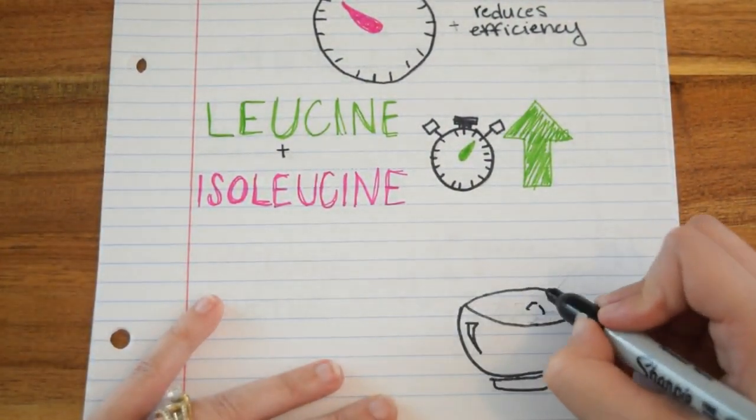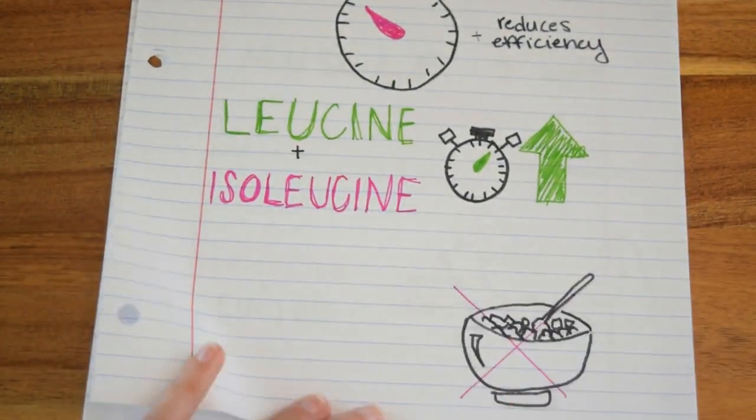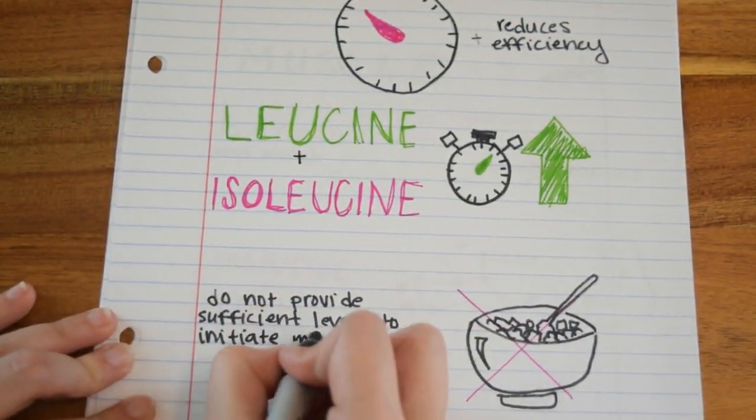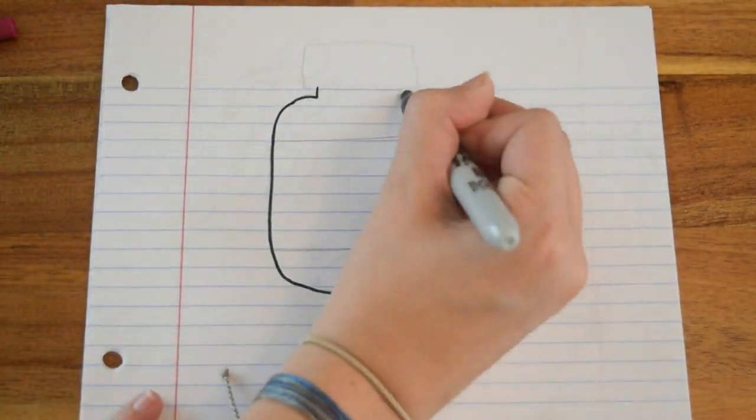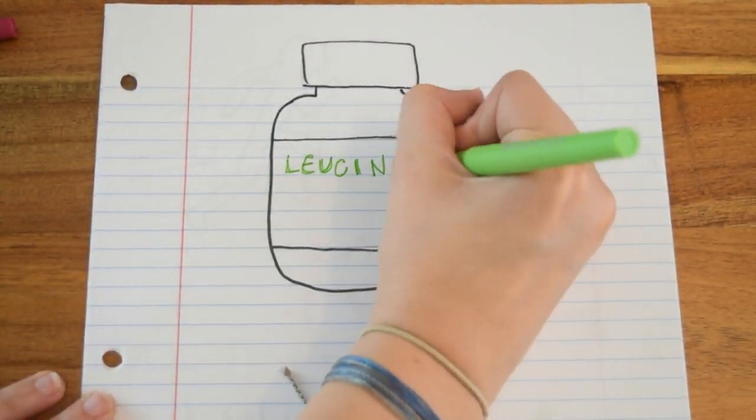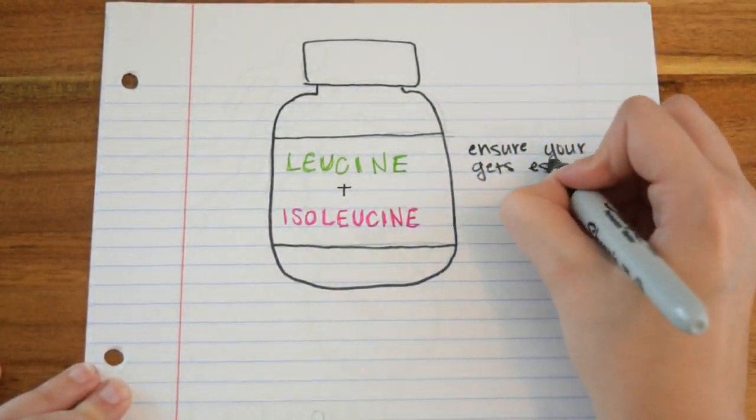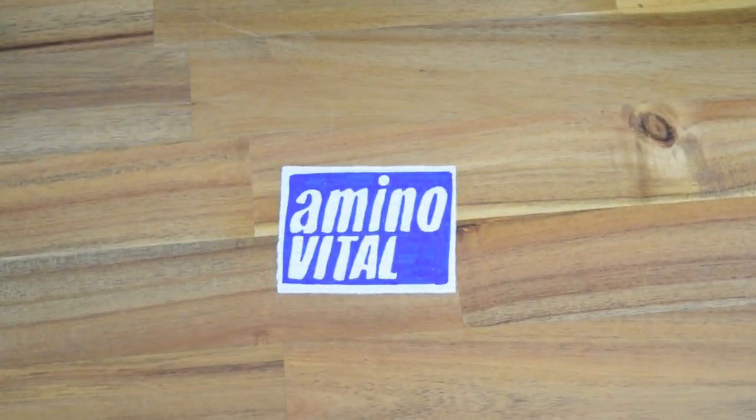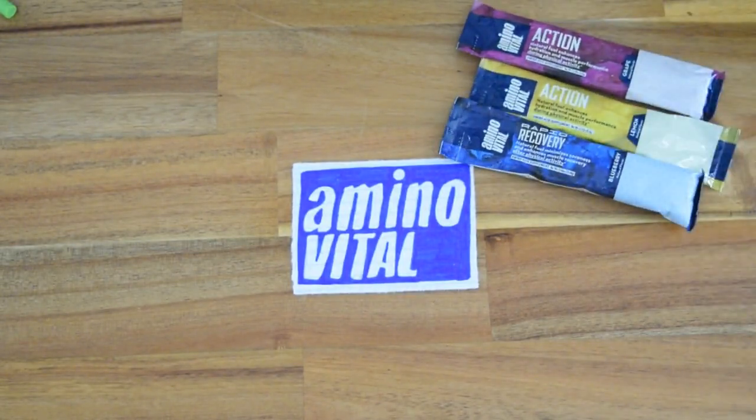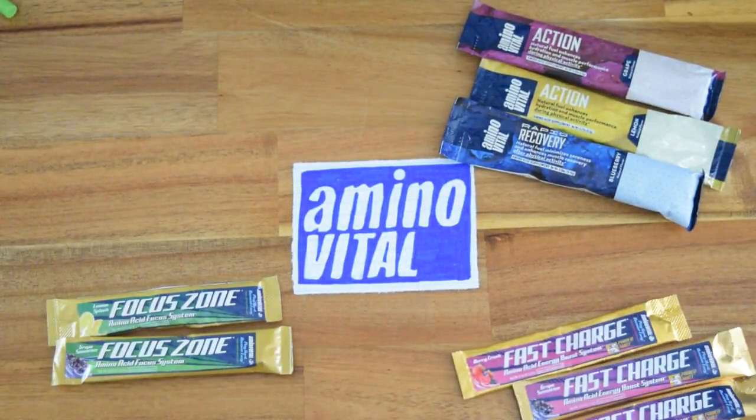Many meals, especially breakfast, do not provide sufficient levels of protein to initiate muscle building. Supplementation with specially formulated leucine and isoleucine can ensure that your body gets enough of these essential amino acids. Amino Vital provides your body with the essential building blocks necessary to perform at your best.